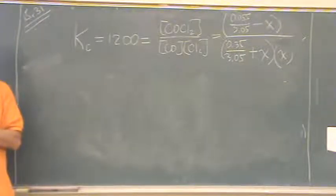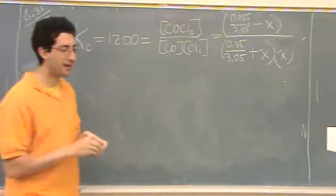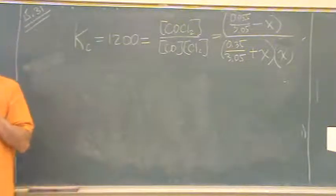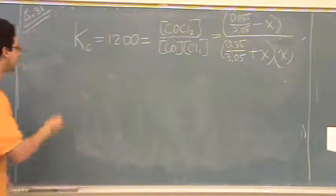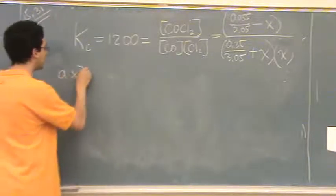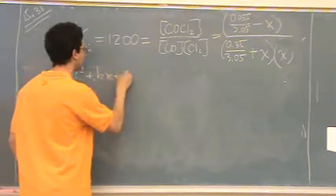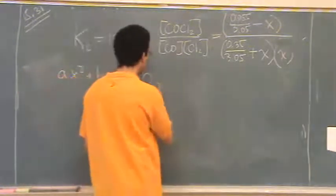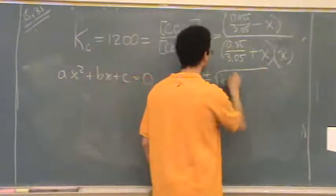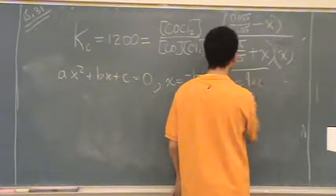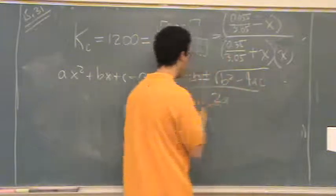Yeah, so I'm assuming you know how to do that in this class. I'll write it down. If you have AX squared plus BX plus C equals 0, then X equals negative B plus or minus the square root of B squared minus 4 times A times C all over 2A.